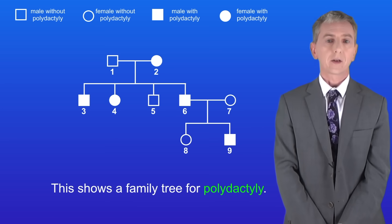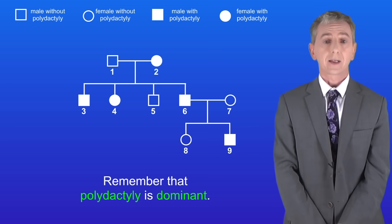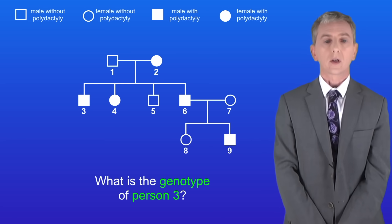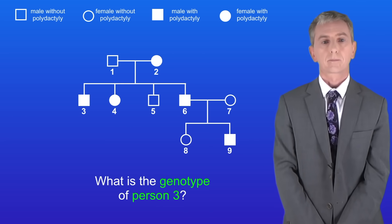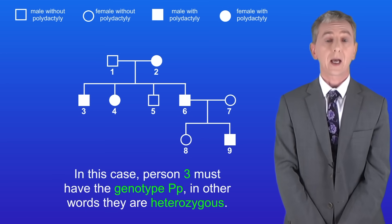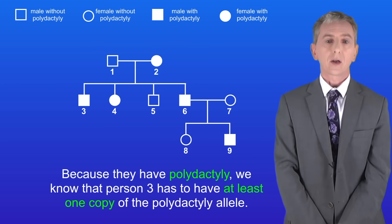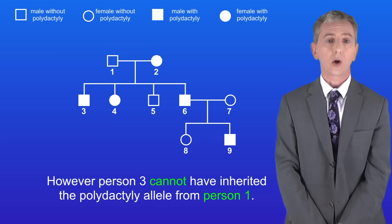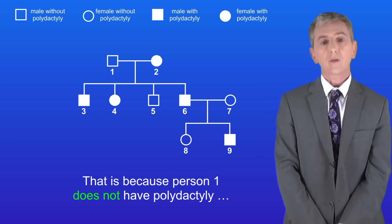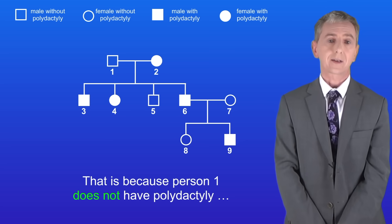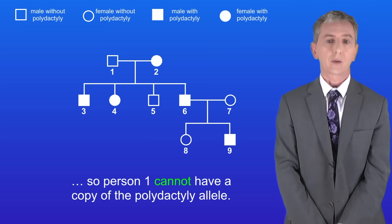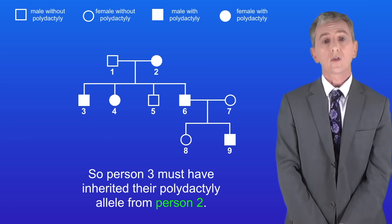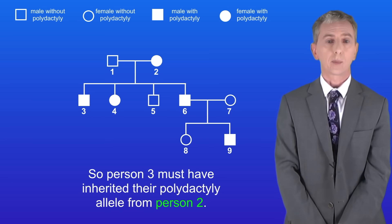I'm now showing you a family tree for polydactyly, and remember that polydactyly is dominant. Here's the first question: what's the genotype of person 3? Person 3 must have the genotype capital P, lowercase p — in other words they're heterozygous. Because they have polydactyly we know that person 3 has to have at least one copy of the polydactyly allele. However person 3 cannot have inherited the polydactyly allele from person 1, because person 1 does not have polydactyly and so cannot have a copy of that allele. So person 3 must have inherited their polydactyly allele from person 2.